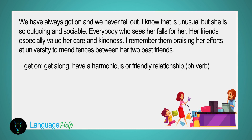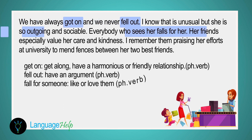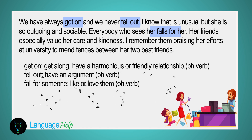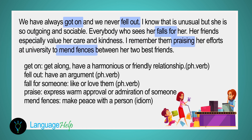The second cue is what do you usually do together. Our answer: 'We have always got on and we never fell out — I know that is unusual. But she is so outgoing and sociable, everybody who sees her falls for her. Her friends especially value her care and kindness. I remember them praising her efforts at university to mend fences between her two best friends.'